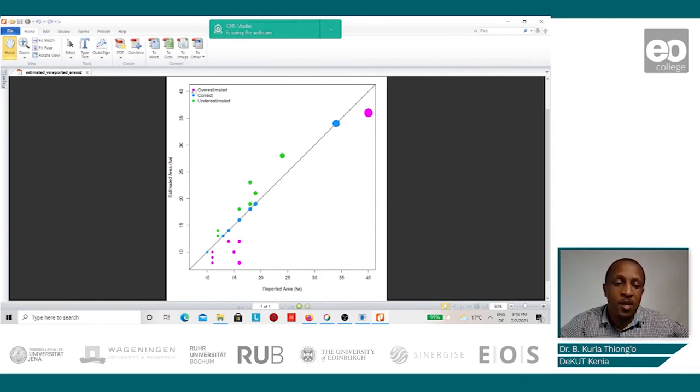We have three categories: the first is overestimated, the second is correct measurements, and the third is underestimated. Everything in blue which lies on the diagonal line was correctly estimated, meaning there was a one-to-one match between the reported area by the farmers and the estimated area from the satellite images.